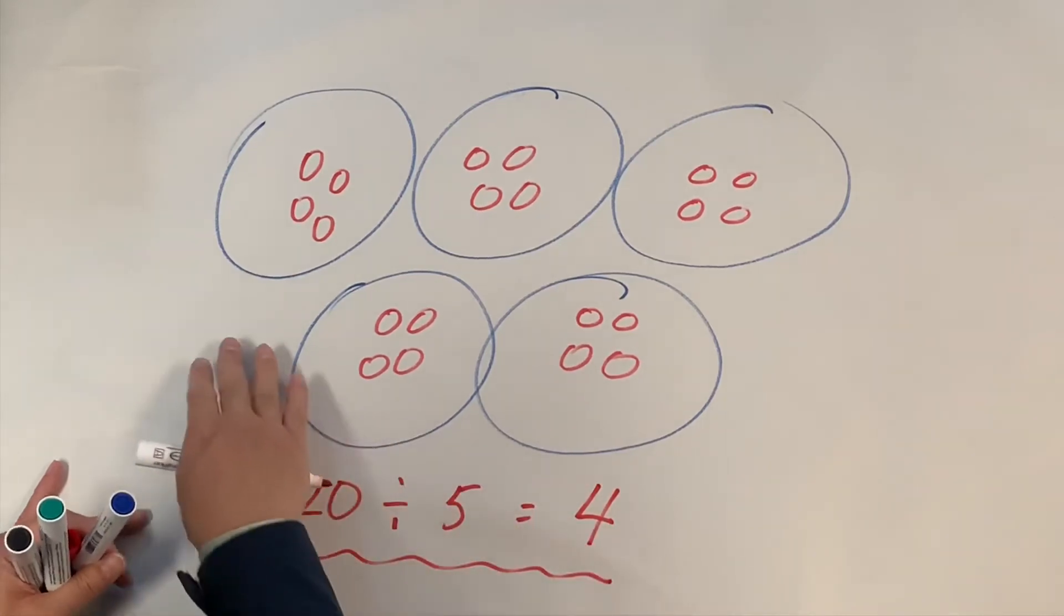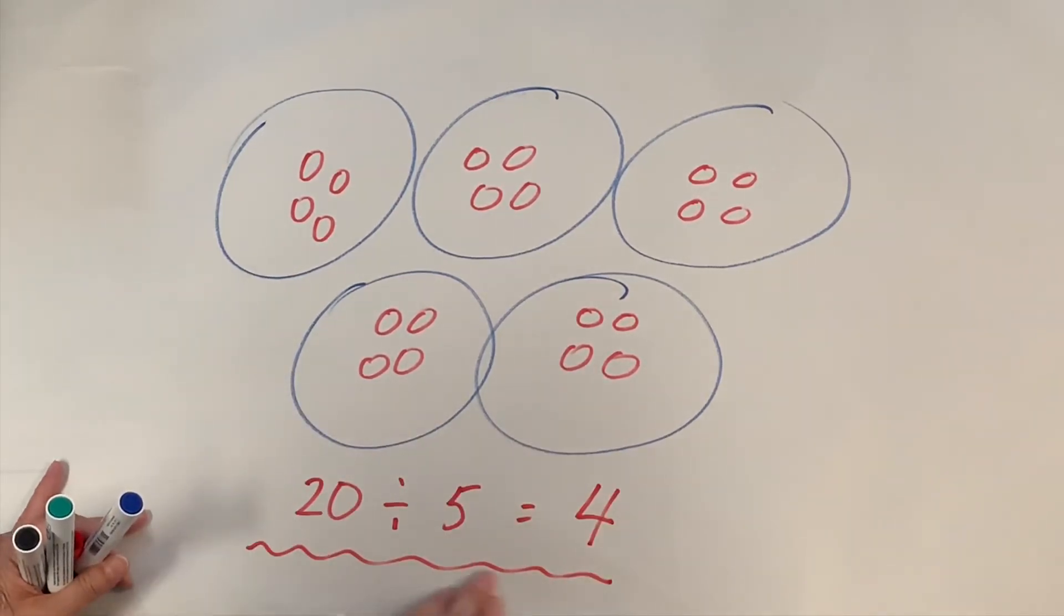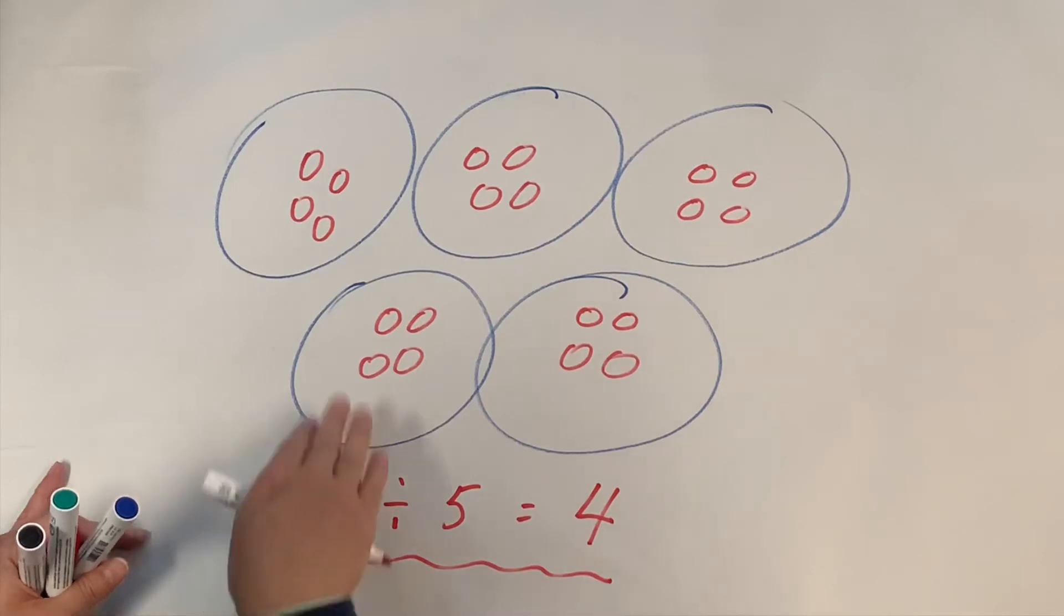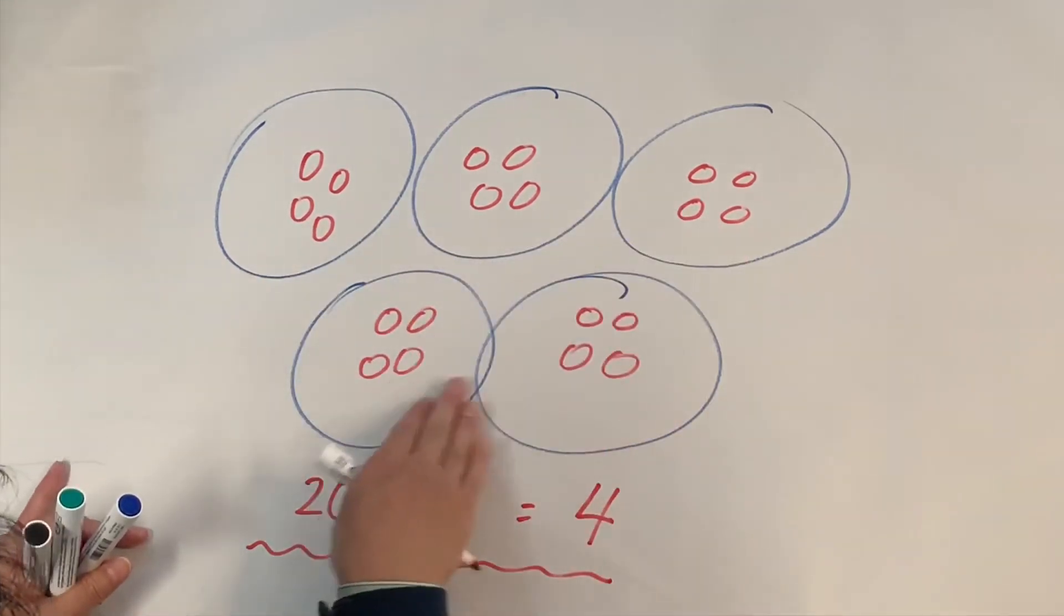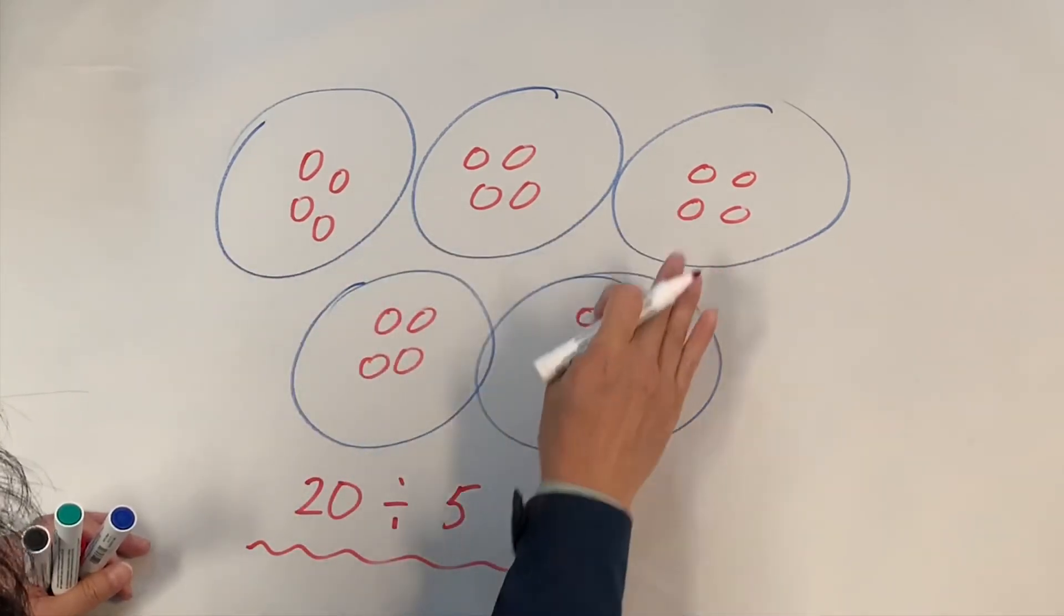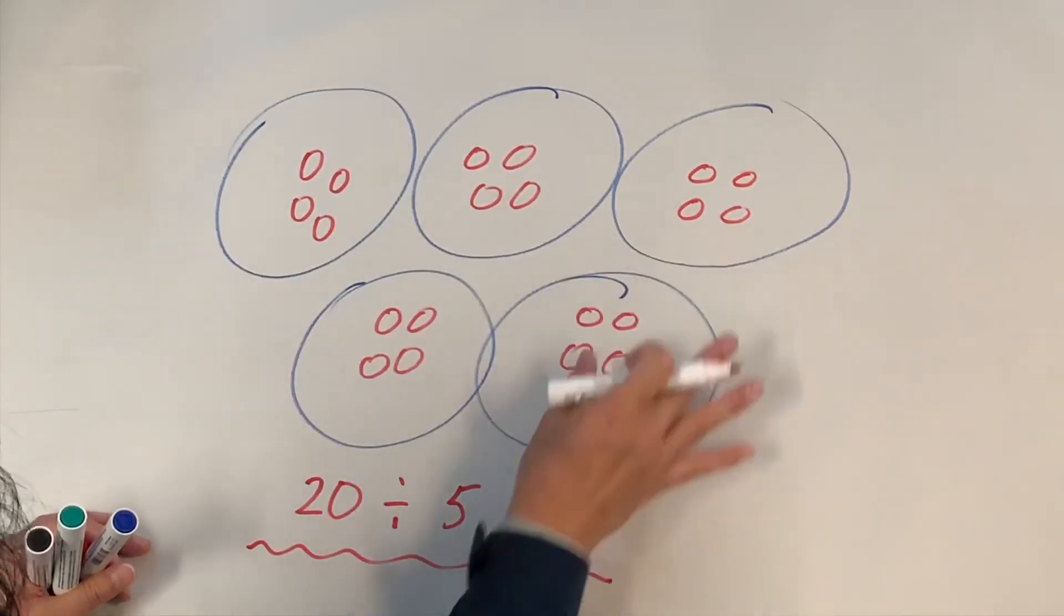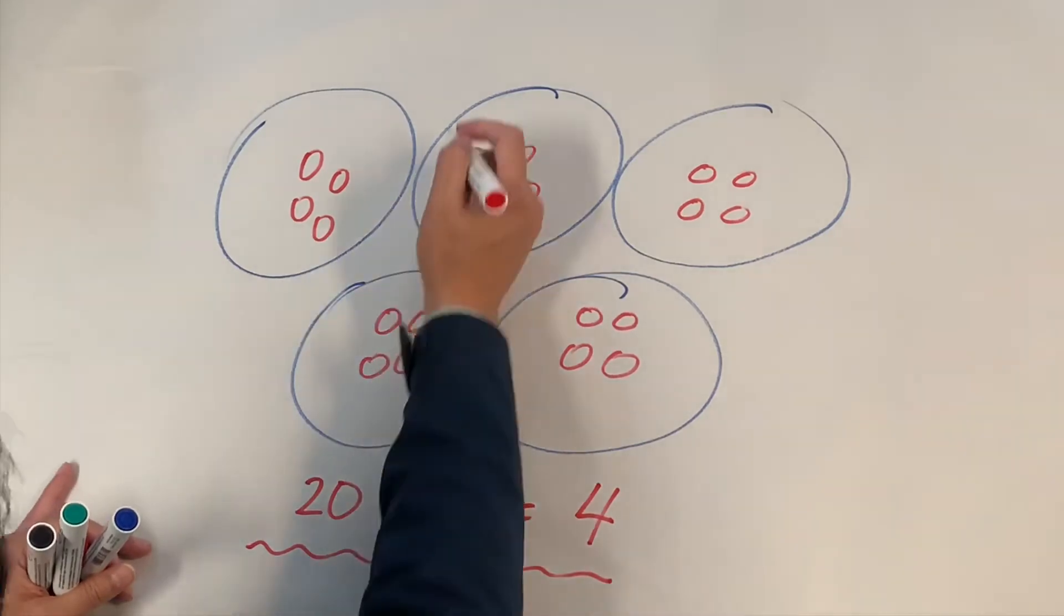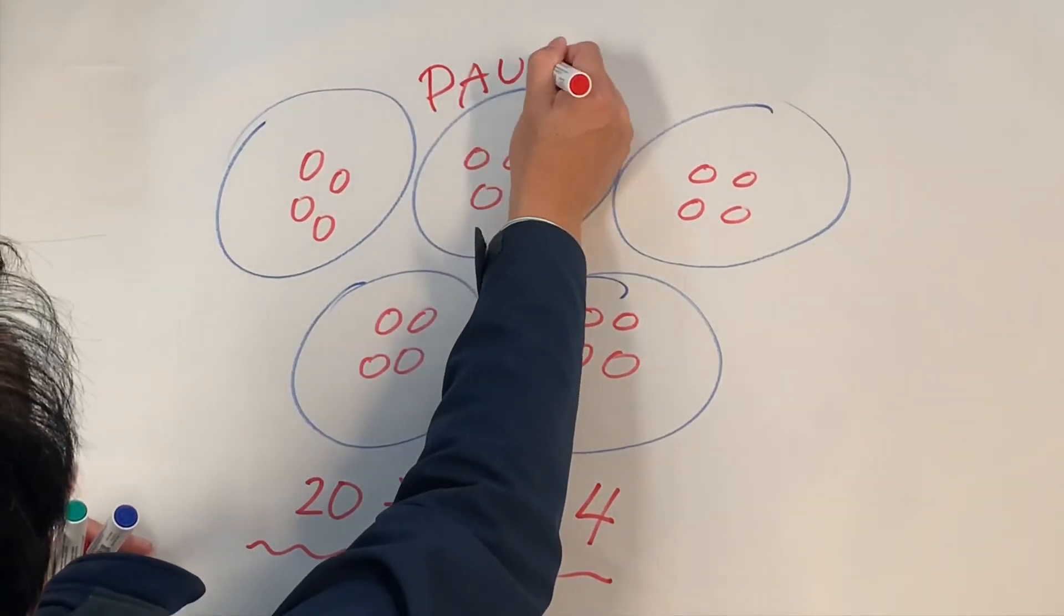Now I want you to come up with a division sentence by drawing some circles. You decide how many circles you want and draw same number of marbles in each bag. So let's pause the video. This is your last task.